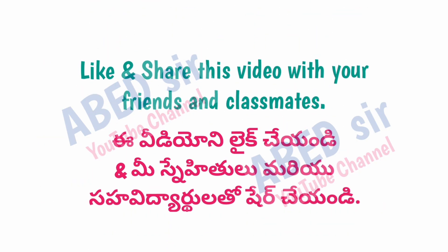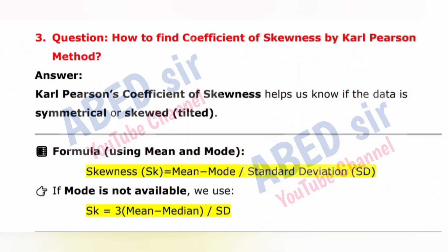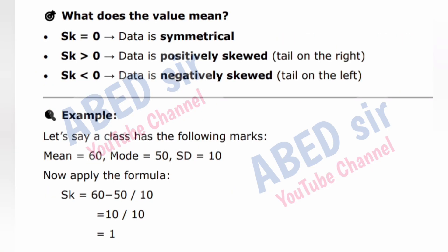Next important long question: How to find coefficient of skewness by Carl Pearson's method? Answer: Carl Pearson's coefficient of skewness helps us know if the data is symmetrical or skewed. Formula using mean and mode: SK = (Mean − Mode) / SD. If mode is not available, we use: SK = 3(Mean − Median) / SD. What does the value mean? SK = 0: data is symmetrical. SK > 0: data is positively skewed (tail on the right). SK < 0: data is negatively skewed (tail on the left).